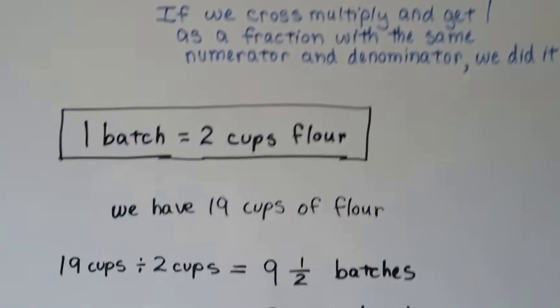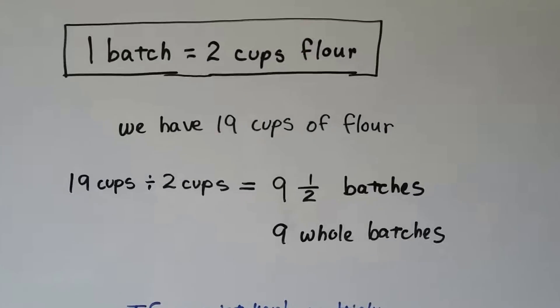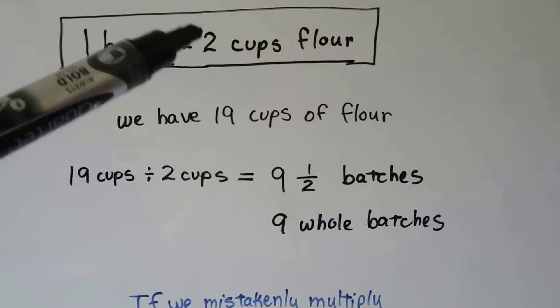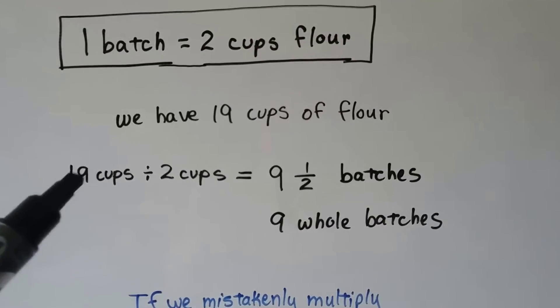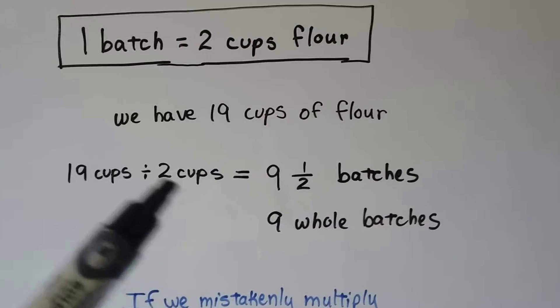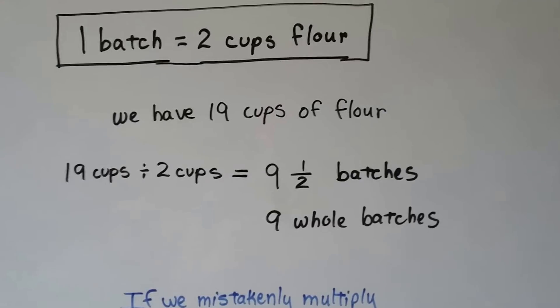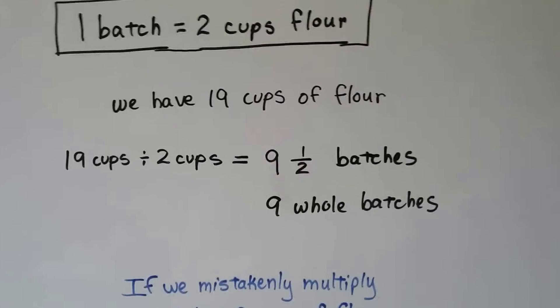Now, if you don't want to look at it as a proportion, we can just use some common sense here. One batch is two cups. They have 19 cups. We can divide the 19 cups by two cups and get nine and a half. But they want whole batches. So that's going to be a nine.